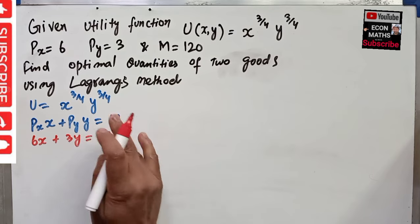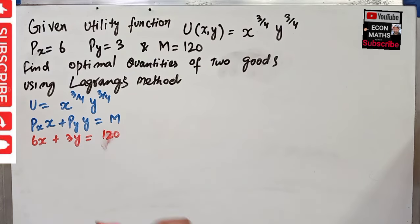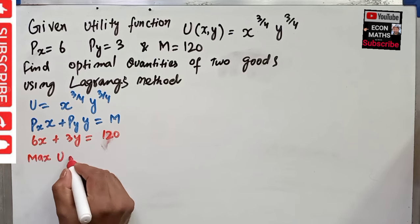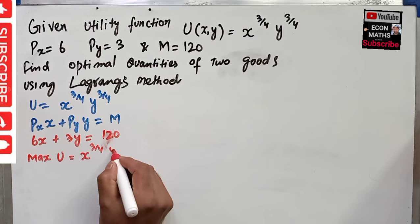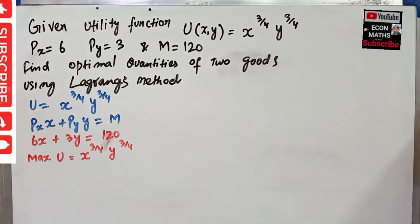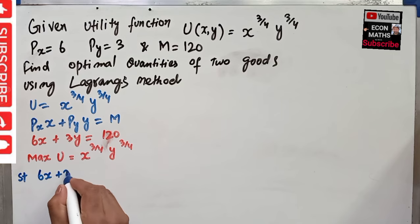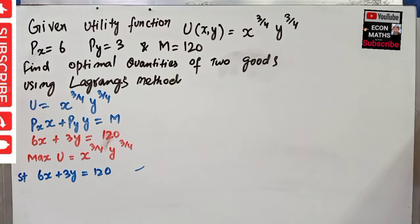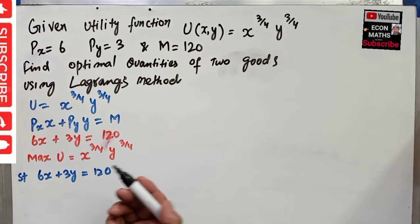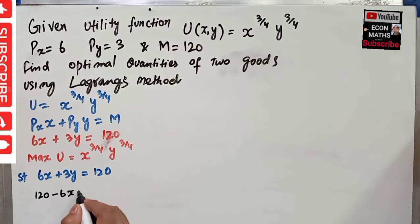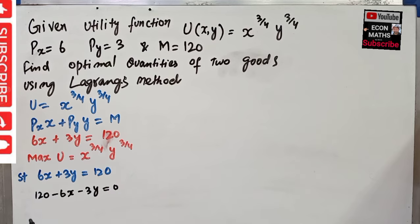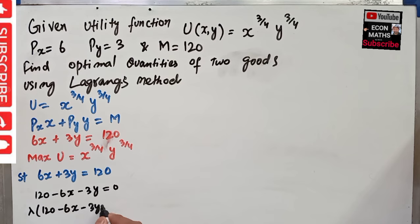Now we need to maximize our utility, x^(3/4) * y^(3/4), to find the optimal quantities, subject to the budget constraint 6x + 3y = 120. Using the Lagrange method, the first step is to set the constraint equal to zero: 120 - 6x - 3y = 0. Then we multiply this constraint by lambda, giving us lambda times (120 - 6x - 3y) = 0.